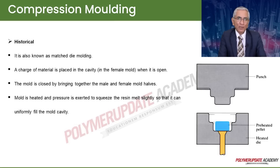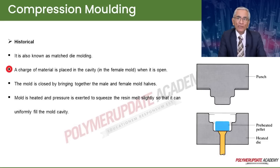Hello everyone, today we shall see a very important process: compression molding. We will see the history of this process, operation, machine, transfer molding, and troubleshooting. It is also known as matched die molding. A charge of thermosetting material is placed in the cavity in the female mold when it is open. The mold is then closed by bringing together the male and female mold halves, and pressure is exerted to squeeze the resin so that it can uniformly fill the mold cavity.